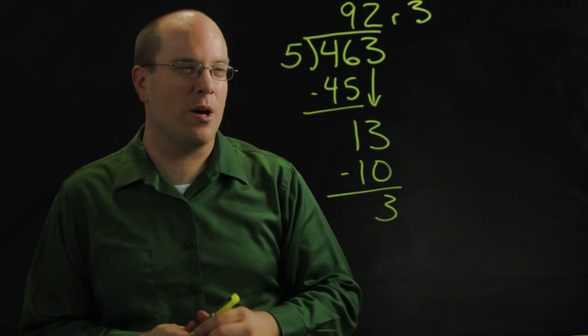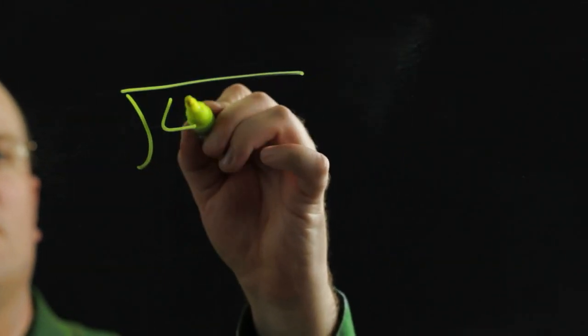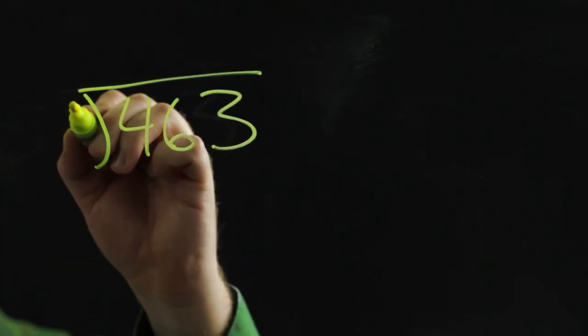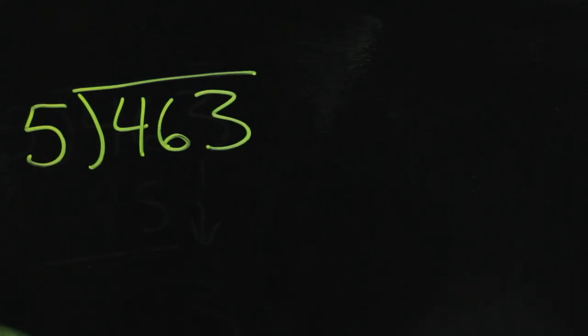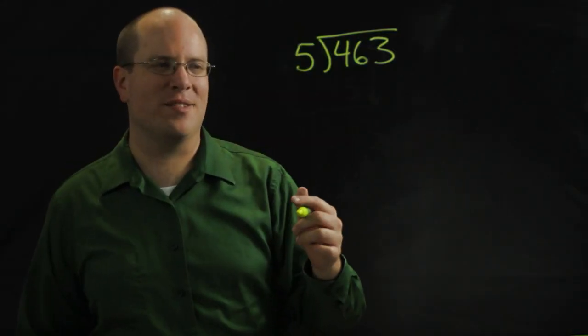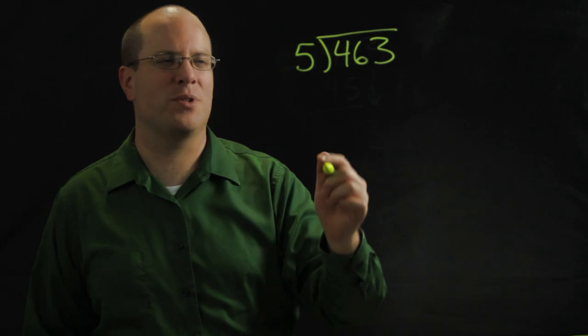Now let me show you a couple of other ways. 463 divided by 5. Now I call this one short division. It's the exact same process as the other, it's just less space.